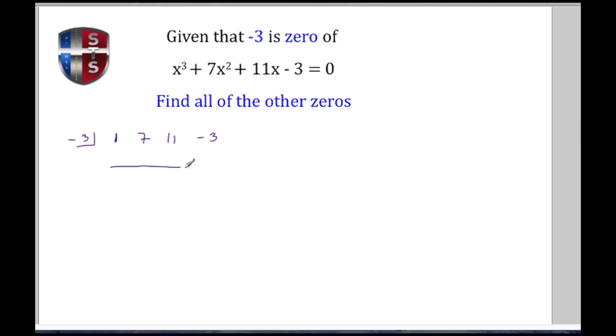I begin by dropping down my first number which is 1. So -3 times 1 is -3, 7 minus 3 gives me 4, -3 times 4 gives me -12, and 11 minus 12 gives me -1.